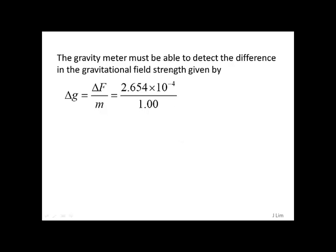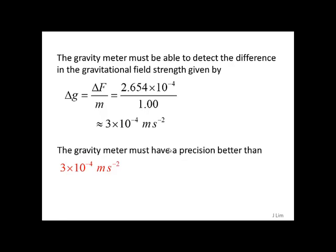The gravity meter must be able to detect the difference in the gravitational field strength by this amount, which is 2.654 times 10 to the power of minus 4 meters per second squared.